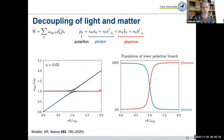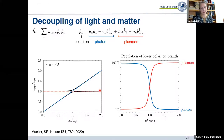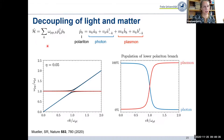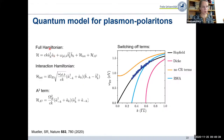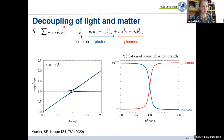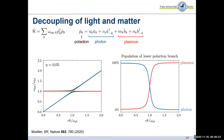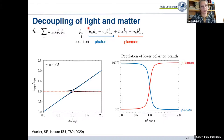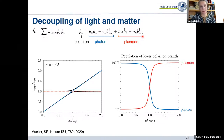Can we also see other signatures of the deep-strong regime? One of the most counter-intuitive predictions is that you will actually get a decoupling of light and matter degrees of freedom. You can write the Hamiltonian in terms of polaritons, and every polariton has some contributions that are originally photonic and some that are matter-like — in this case plasmonic.